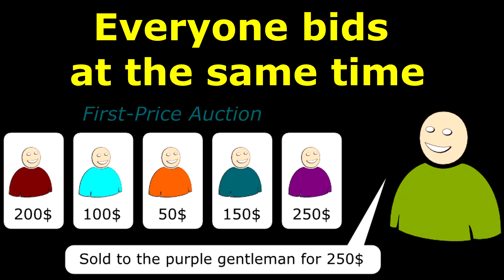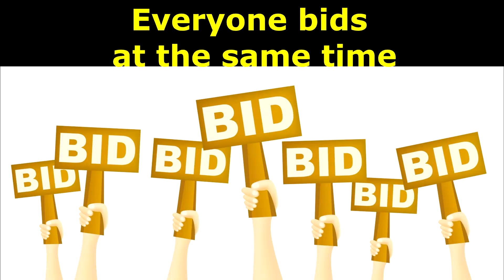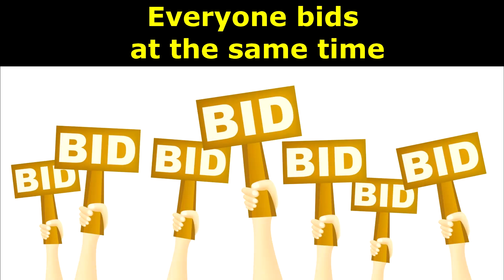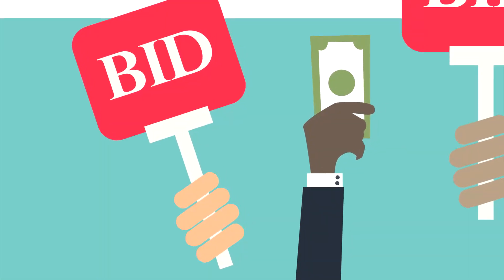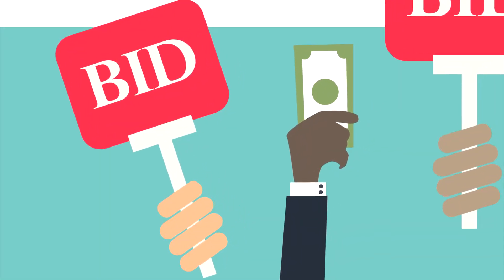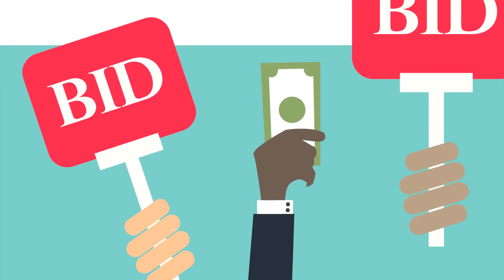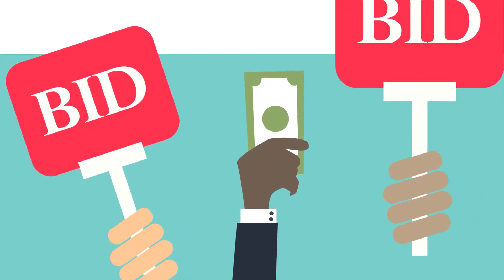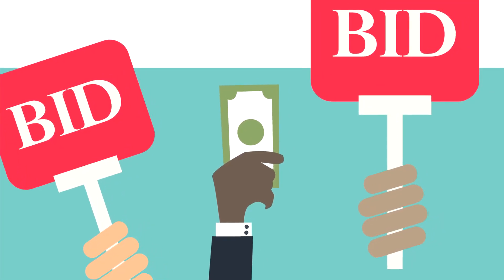Sealed first price auction, or blind auction, also known as a first price sealed bid auction (FPS): all bidders simultaneously submit sealed bids so that no bidder knows the bid of any other participant. The highest bidder pays the price they submitted. Bidders can only submit one bid each and cannot adjust their bids based on others.